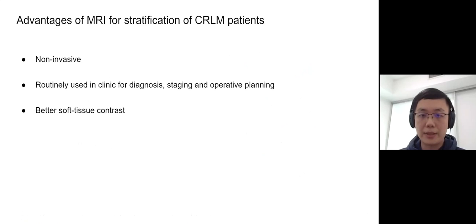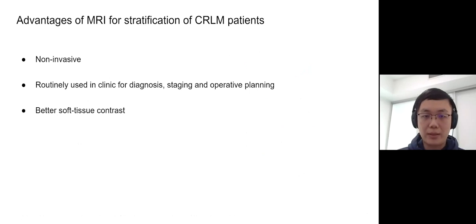Medical imaging could be a good tool for stratifying liver metastases patients because medical imaging is non-invasive and the images are routinely collected in clinic for diagnosis, staging, and operative planning. I've been working on magnetic resonance imaging because MRI can provide very good contrast of soft tissues and can highlight different structures with the help of different acquisition parameters and contrast agents.